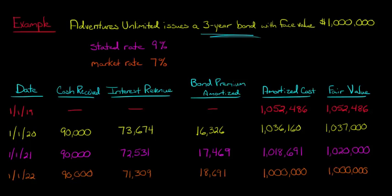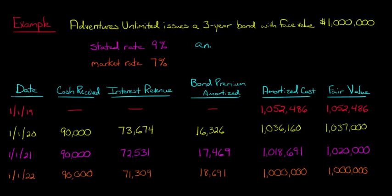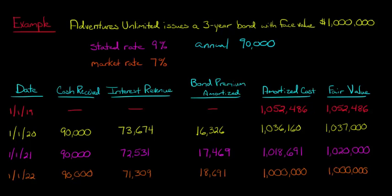We've got a three-year bond with a face value of a million dollars. We're going to buy it at a premium because the stated rate — the rate of interest that the bond pays — is 9%, and this is annual interest. So the bond's going to pay us interest of $90,000 a year. It's this 9% rate even though the market rate is 7%, and that's why we're paying a premium for these bonds. The amortized cost of these bonds is going to be $1,052,486 when we buy the bonds — there's a $52,486 premium.